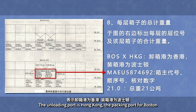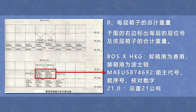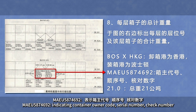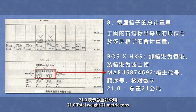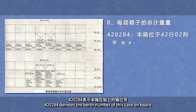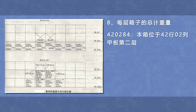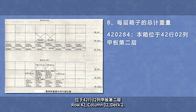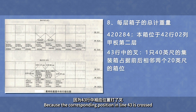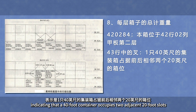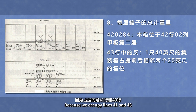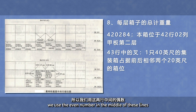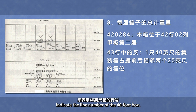例如，我们看舱位图中的420284箱位：BOSHKG表示卸港为香港，装港为波士顿。MAEU5874692表示箱组代号、顺序号、核对数字。21.0表示总重21公吨。420284表示本箱在船上的箱位号，位于42舱零二列甲板第二层。因为43舱中相应的位置打了叉，表示是1只40英尺的集装箱，占据前后箱零两个20英尺的箱位。因为占据的是41舱和43舱，所以用这两舱中间的偶数来表示40英尺箱的舱号。